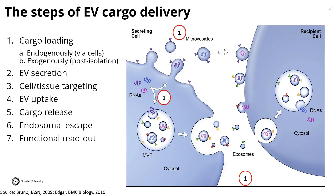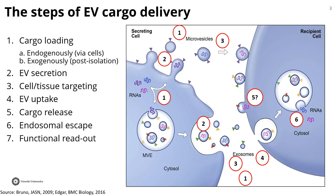Cargo loading can occur in the cell, but can also be done post-isolation. After EV release, your EVs will need to interact with your target cell. Tissue targeting is a major field within EV research. One thing that's incredibly important for EV cargo delivery is EV uptake. For intraluminal delivery — cargo on the inside of your EV — membrane fusion will need to occur somewhere within the target cell. Theoretically this could happen directly at the cell membrane, but what we actually see is that endocytosis is one of the main processes. If we knock down or inhibit endocytosis in the target cell, we very much block most EV cargo delivery.